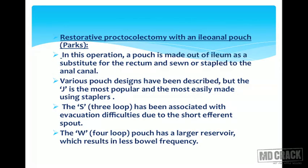Restorative proctocolectomy with an ileoanal pouch — the PARKS operation — involves making a pouch out of ileum as a substitute for the rectum, sewn or stapled to the anal canal. There are various pouch designs: J shape is the most popular and most easily made using staplers; S shape (3-loop) is associated with evacuation difficulties due to a short efferent spout; and W shape (4-loop) has a large reservoir which results in less bowel frequency.